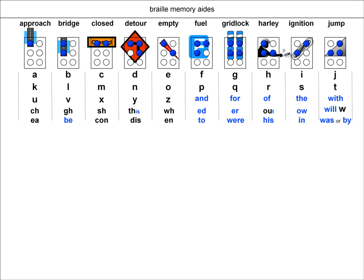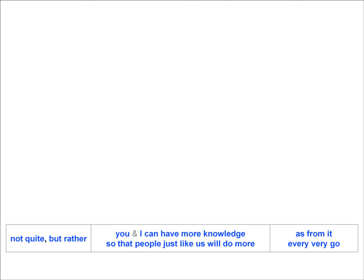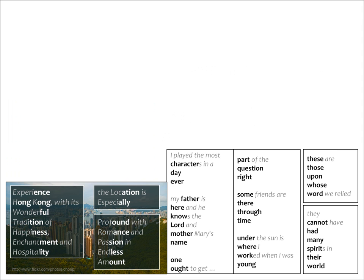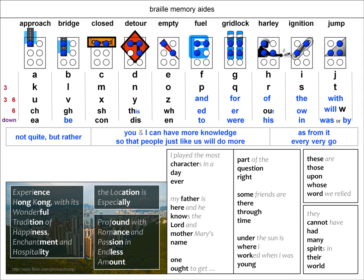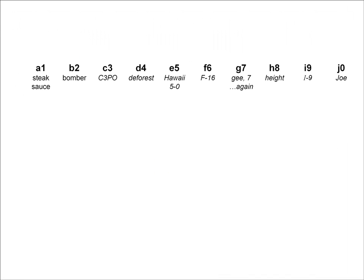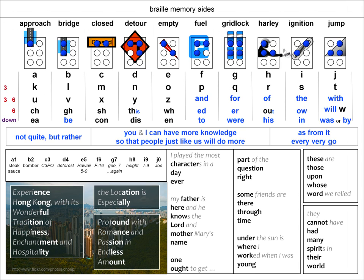The K row also had dot 3 raised. The U row had dots 3 and 6 raised. The CH row just had dot 6 raised. And finally, the EA row has the same pattern of dots as cells A through J, except they have all been dropped down one position. Now, let's add the words represented by the Braille letters to our cheat sheet. Then, we'll add the memory aids related to the two-cell, partial, and whole-word contractions, and finally the memory aids that helped us remember the numbers associated with letters A through J.